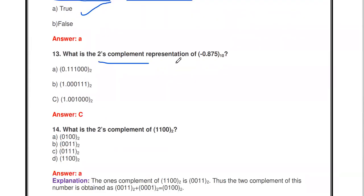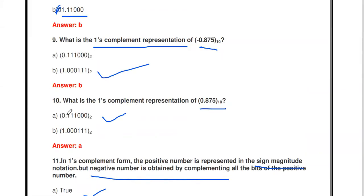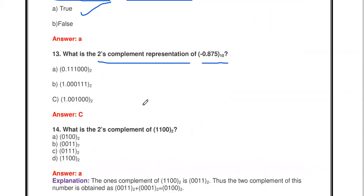What is the two's complement representation of −0.875? Step 1: binary representation of 0.875 is 0.11100. Step 2: take one's complement: 1.00011. Step 3: add 1 to the LSB: 1.00100. So the two's complement of −0.875 is 1.00100. Two's complement = one's complement answer plus 1 added at the LSB.